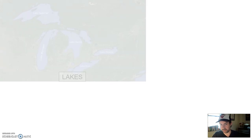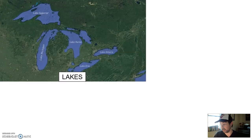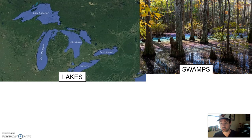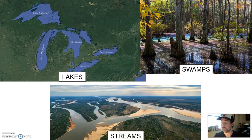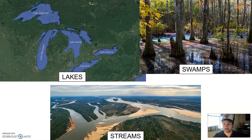Surface water broadly consists of lakes like the Great Lakes, swamps which is stagnant still water, and streams. Lakes and swamps are kind of straightforward, so let's focus in on streams, because streams and moving water generally have a bigger impact on geology and are shaped more by geology.